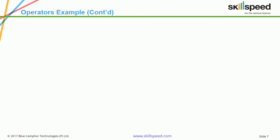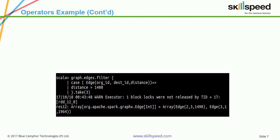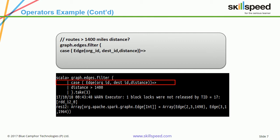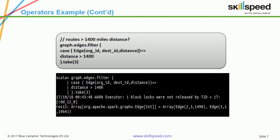Another operator we can use very efficiently is the filter operator. For example, if we want to find all routes that are more than 1400 miles, we do graph.edges.filter. This filters the relationship between the vertices — which is the distance. We write a case matching the edge with its source ID, destination ID, and distance, then apply the condition that distance is greater than 1400.